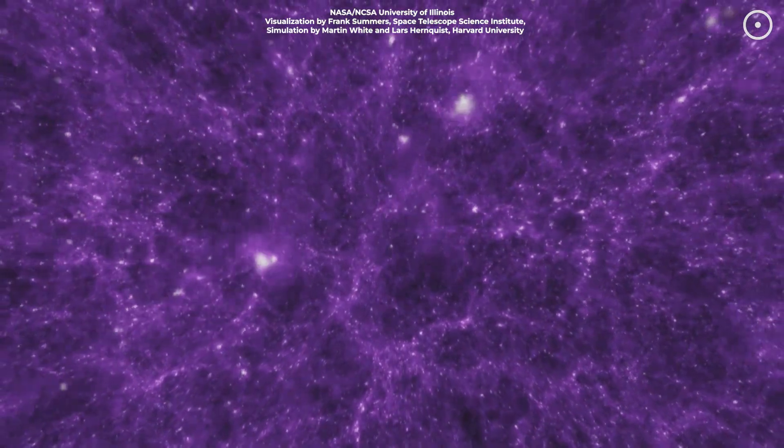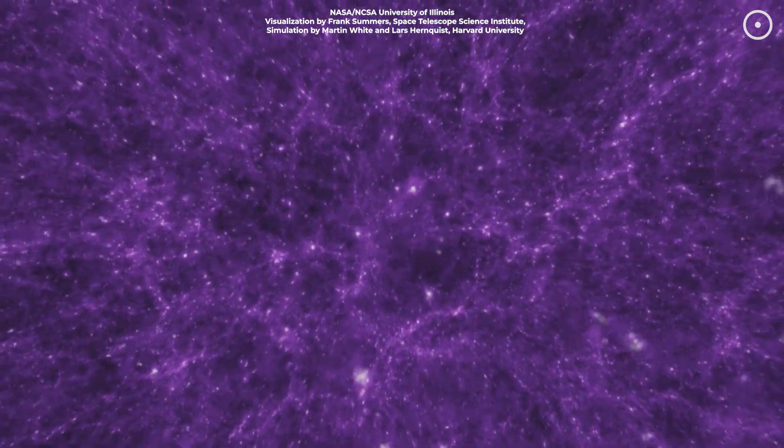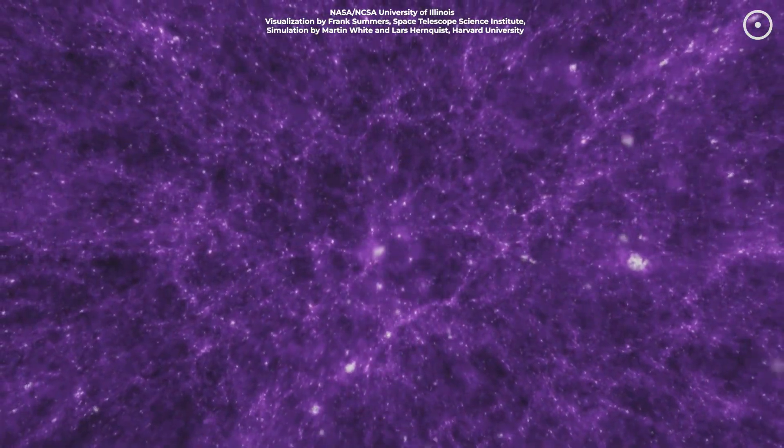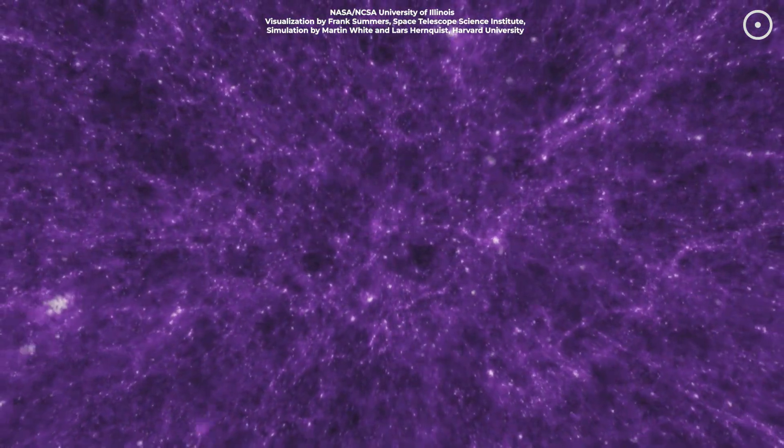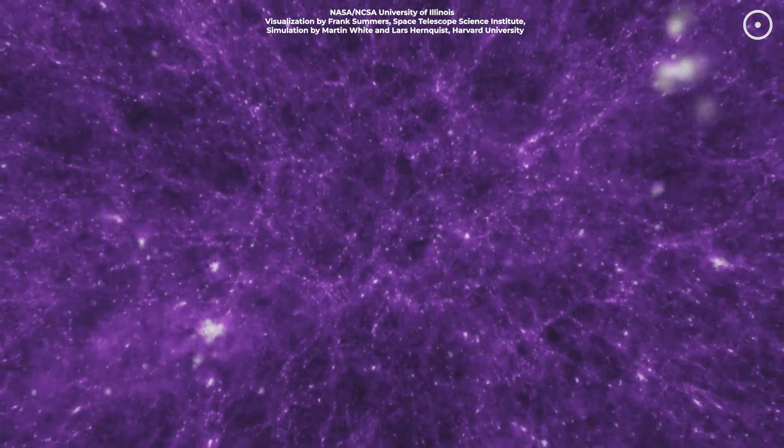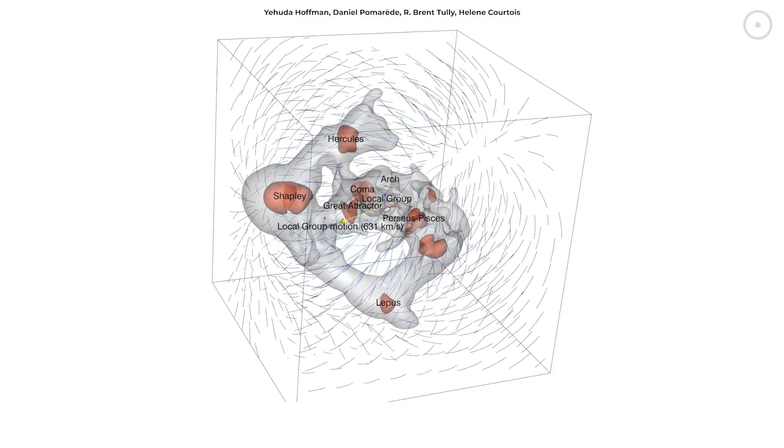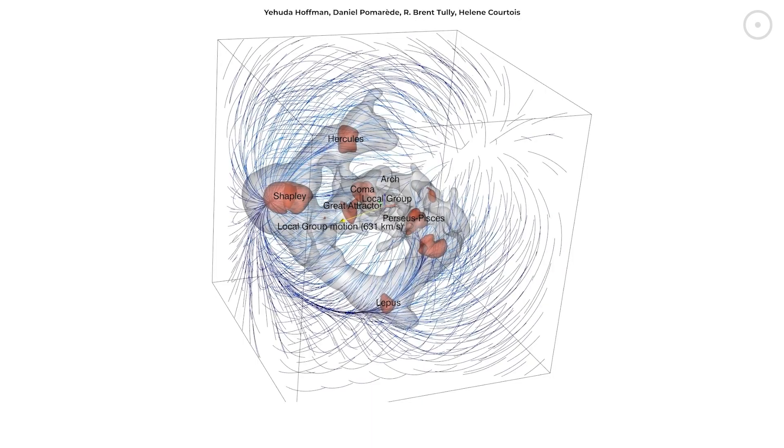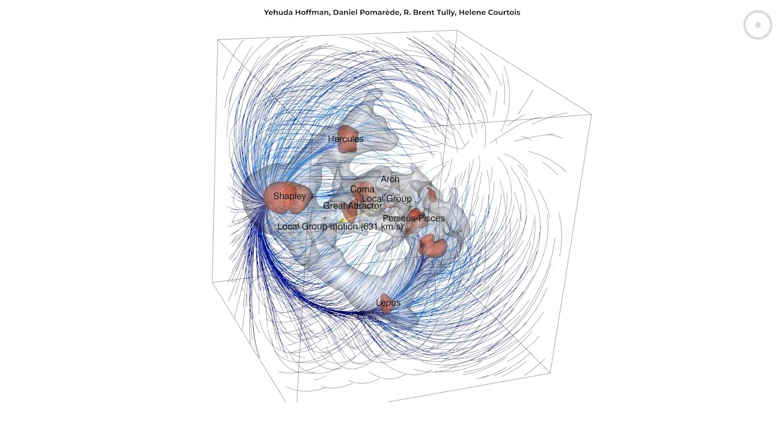We're talking about multiple superclusters. Yes, things bigger than Laniakea, all connected by gravity into one enormous cosmic web. Turns out Laniakea itself is being pulled toward the Shapley Concentration. Essentially, we're part of a galactic caravan, slowly heading toward this enormous gravitational well.